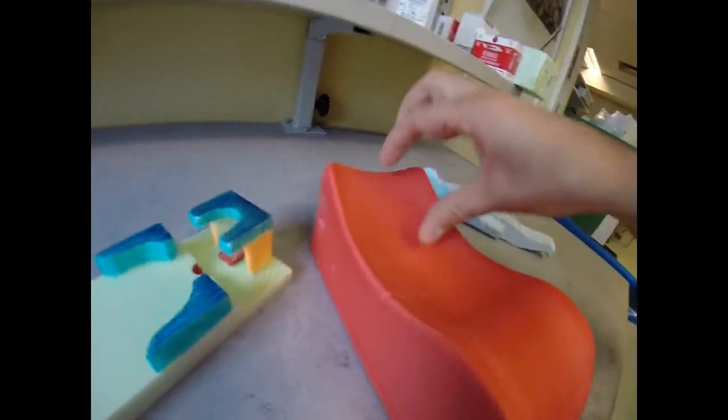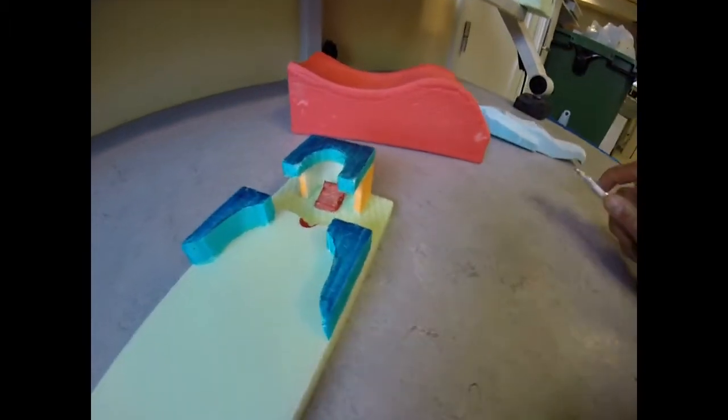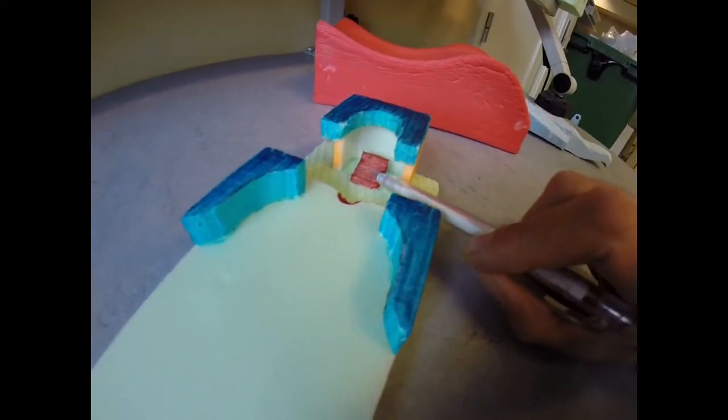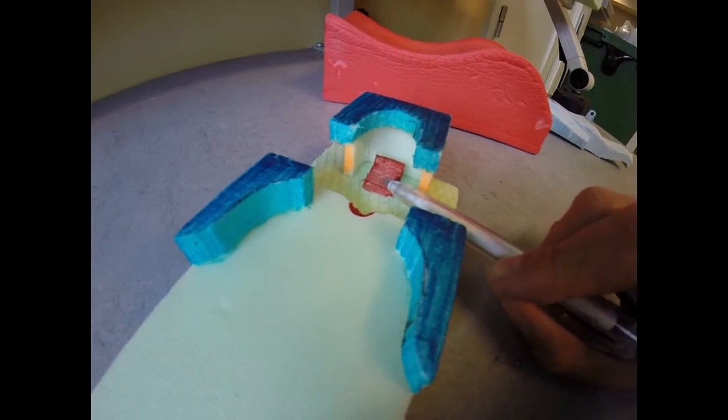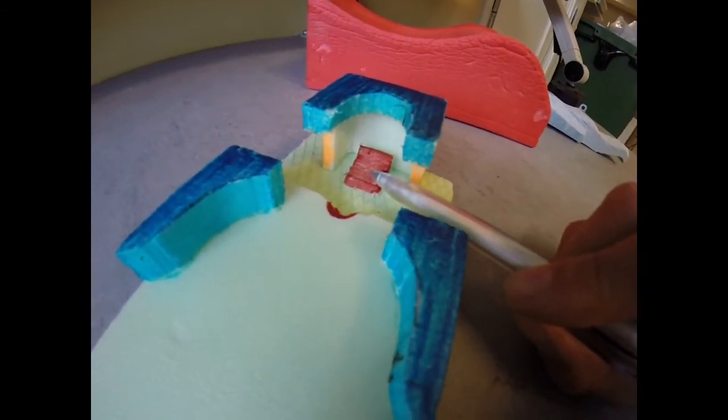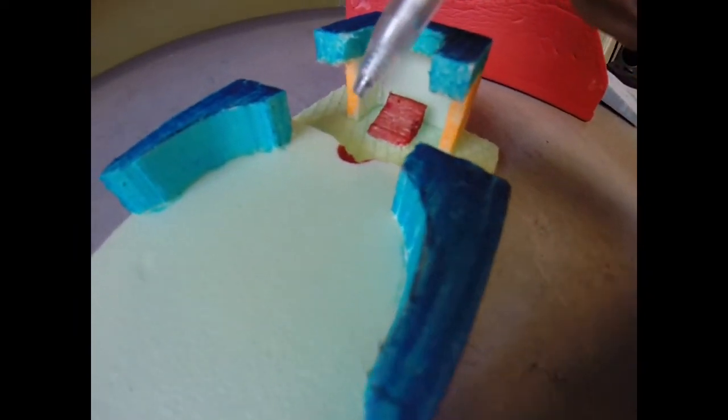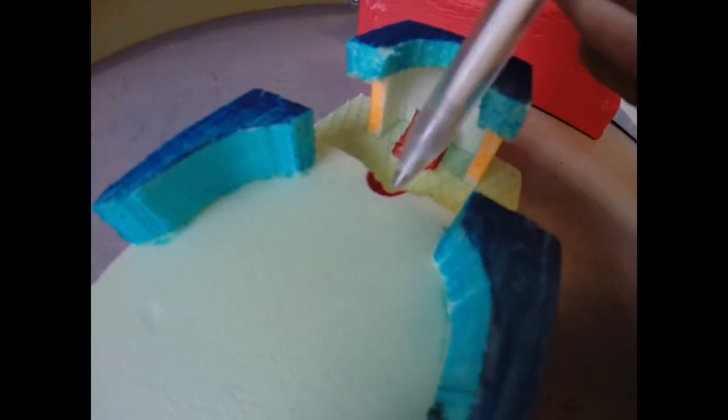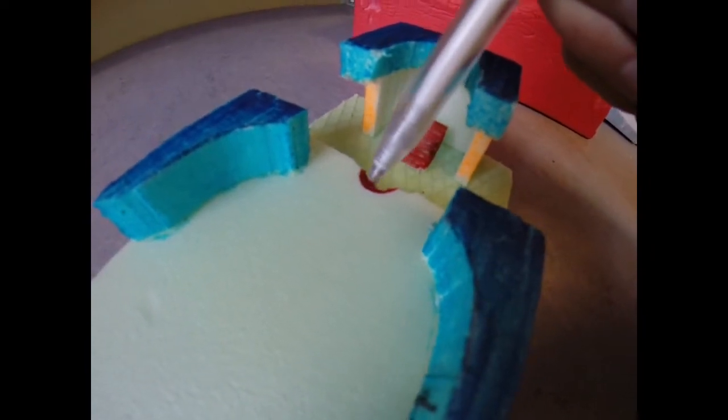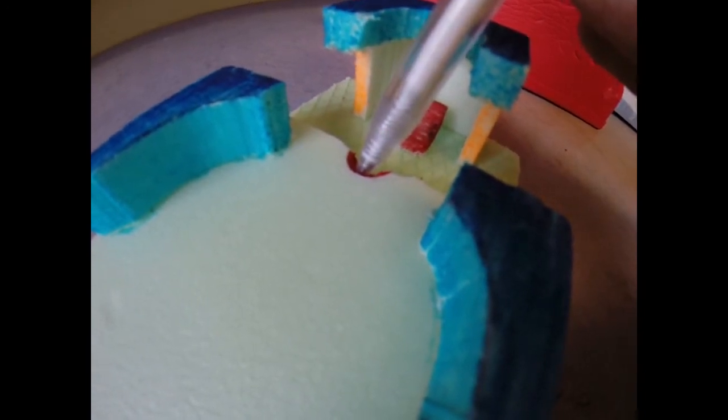And this part was glued here and this was to support the forehead. They made a little hole in the polystyrene and this was to support the chin.